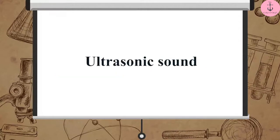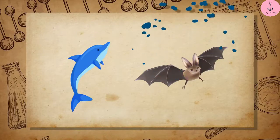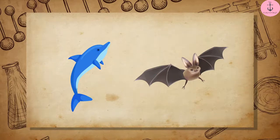Now, let us learn about ultrasonic sound. Sounds of frequencies above 20 kHz is called ultrasonic sound or ultrasound. Ultrasonic sounds are produced by animals like dolphins and bats.